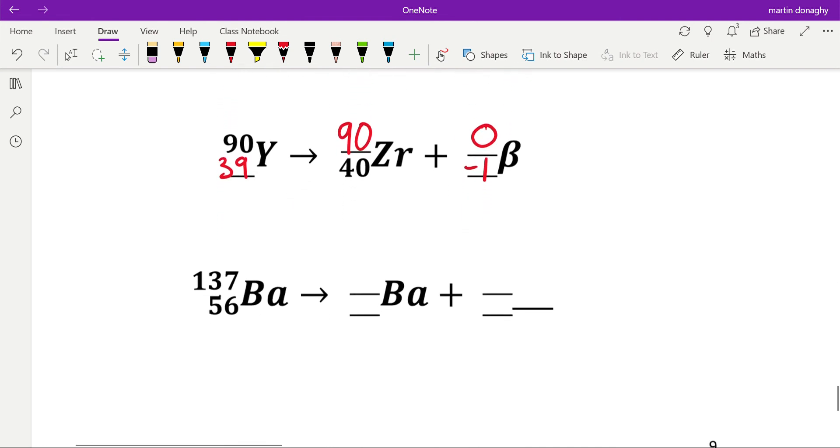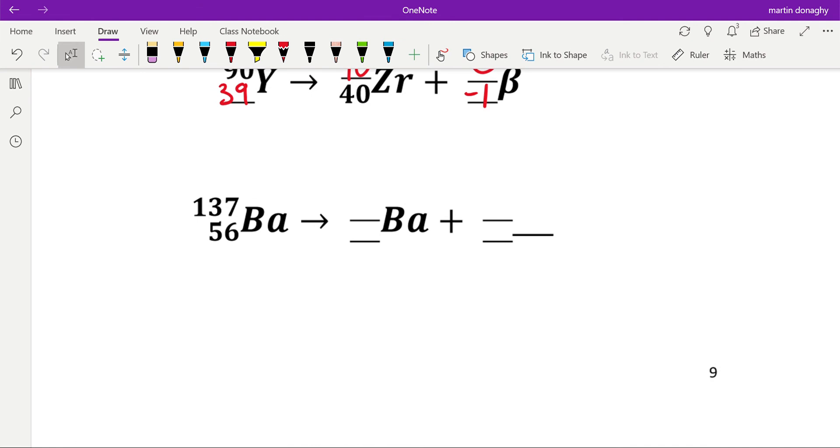Next one, if we notice, we're not given a lot here, but what we are told is this element doesn't change. It stays as barium, and therefore if it stays as that, it must have the same atomic number. Therefore this is zero, and if that's zero, it has to be gamma.